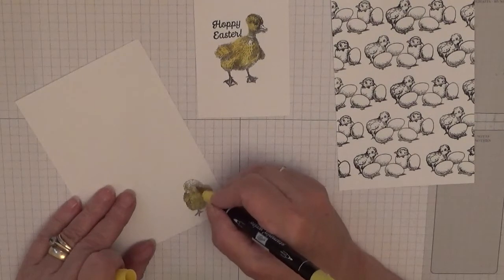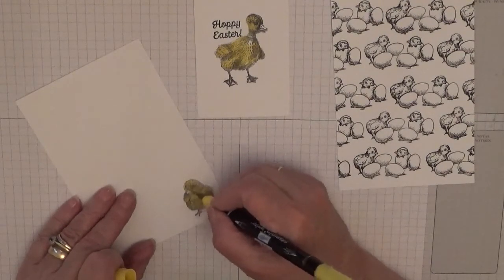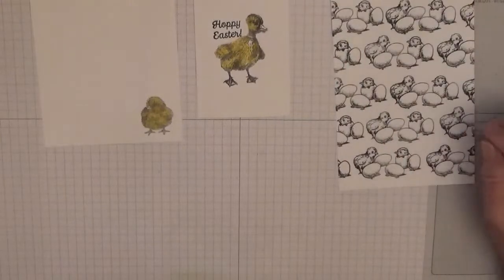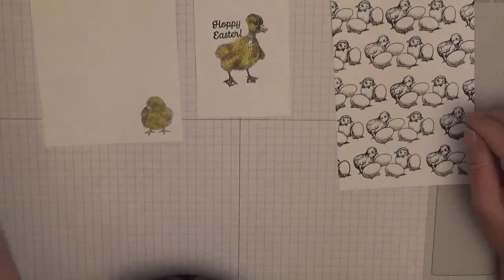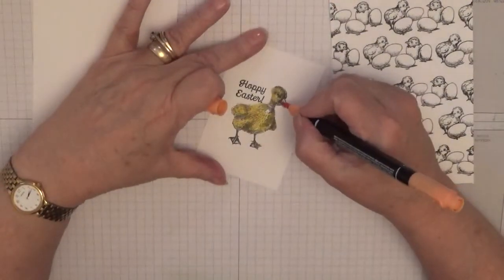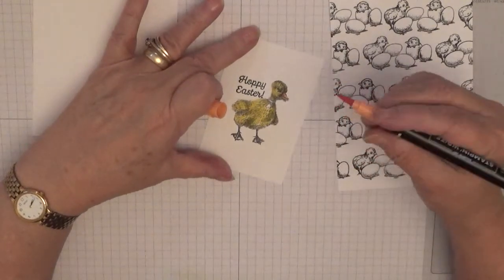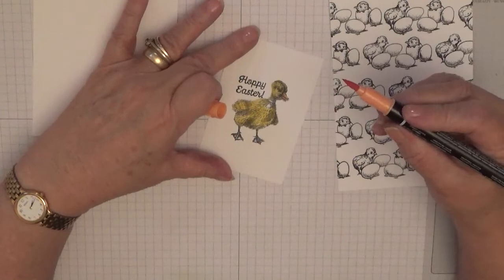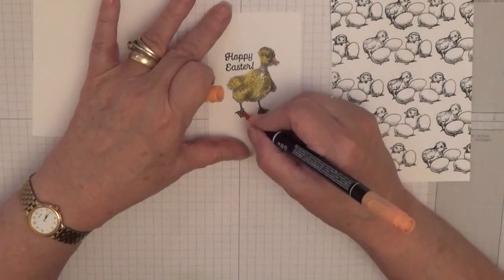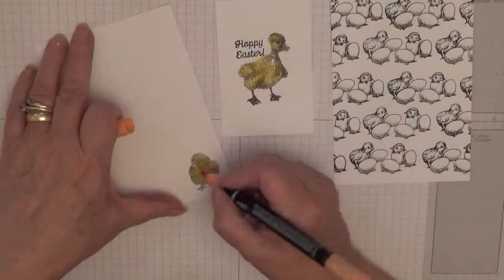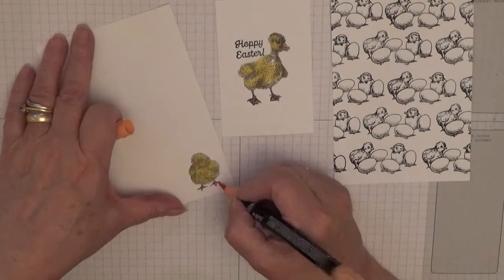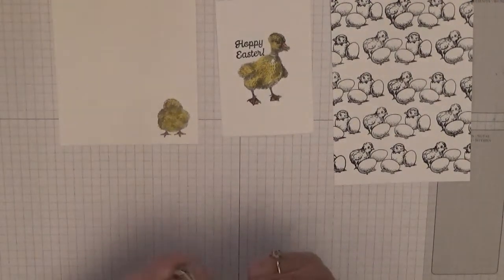I don't usually make Easter cards but I thought I'd use these stamp sets up. I'm using Grapefruit Grove, just coloring this beak and his feet, just put some color in.